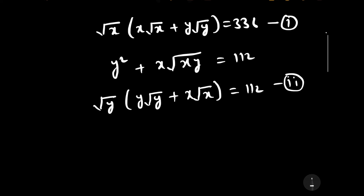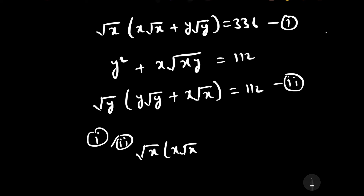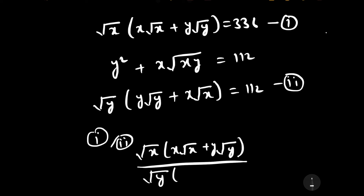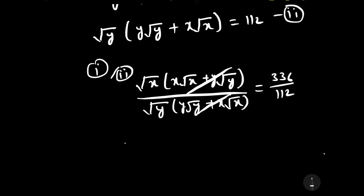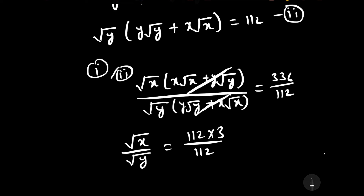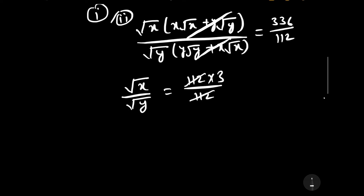If we divide the first equation by the second equation, the common factor (x times square root of x plus y times square root of y) cancels out, leaving square root of x divided by square root of y equals 336 divided by 112. Since 336 equals 112 times 3, the 112 cancels and we get square root of x over square root of y equals 3.